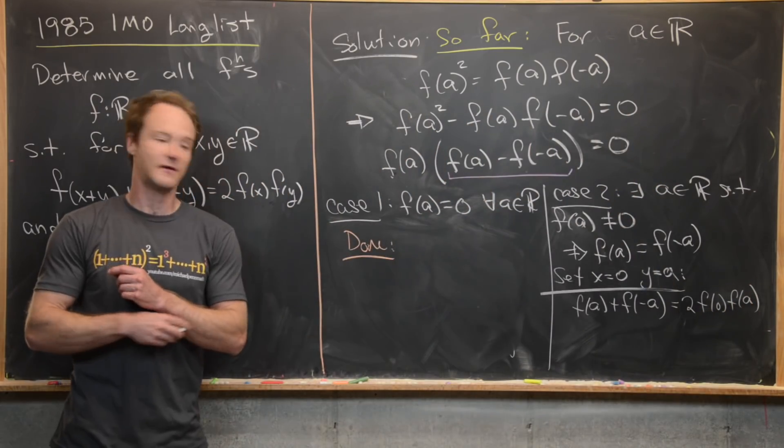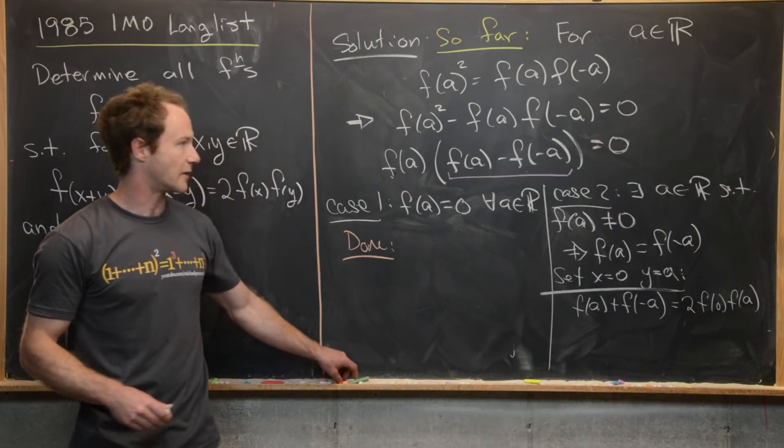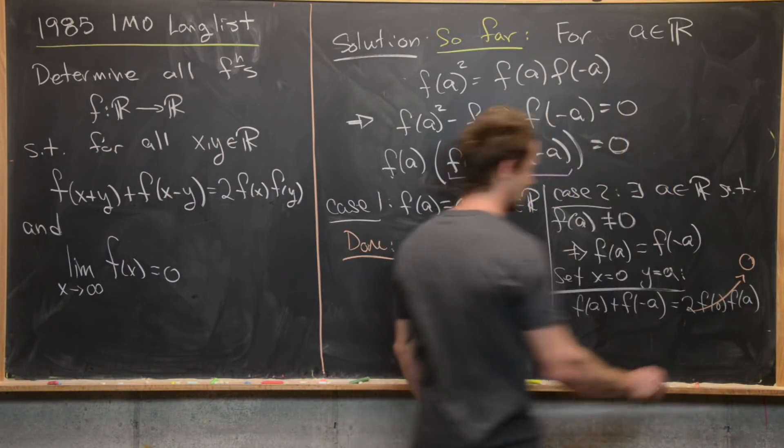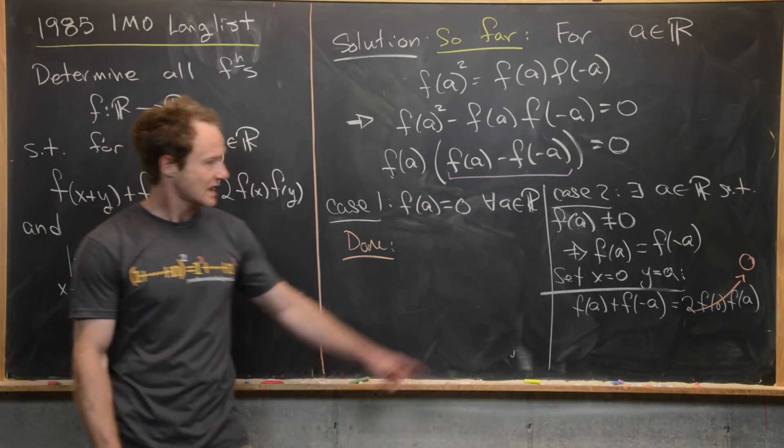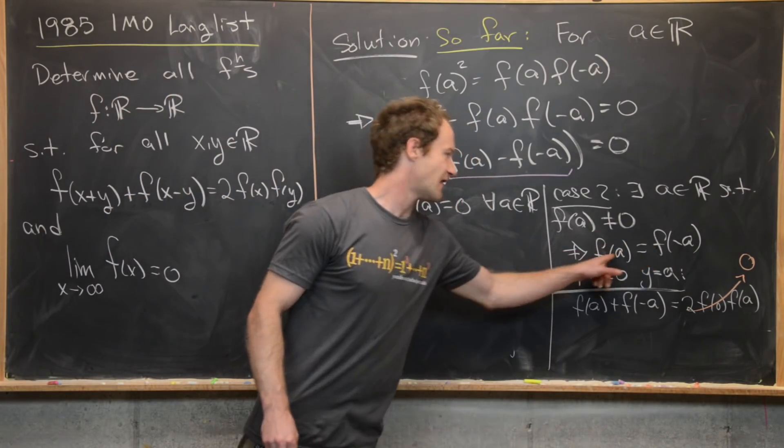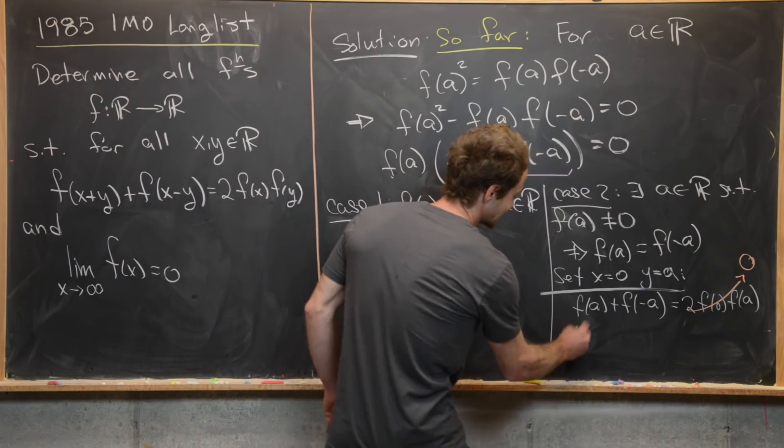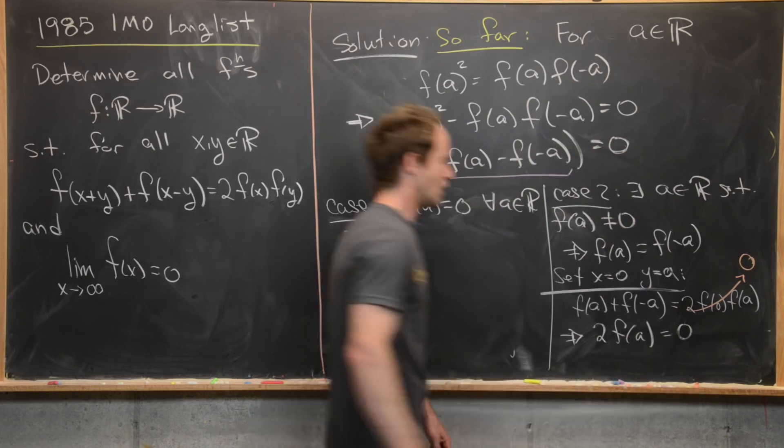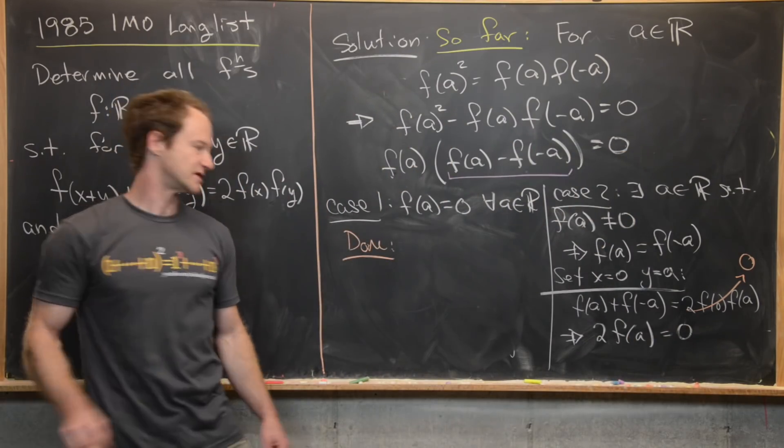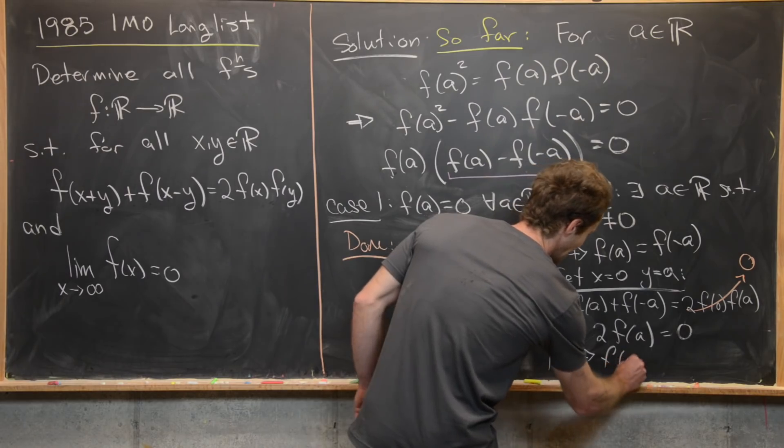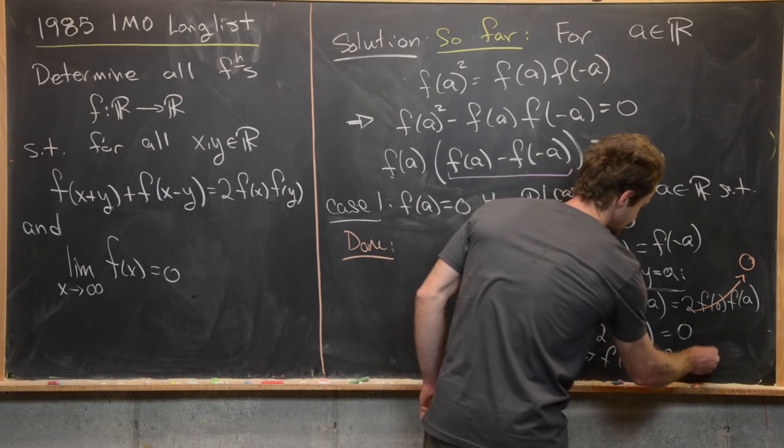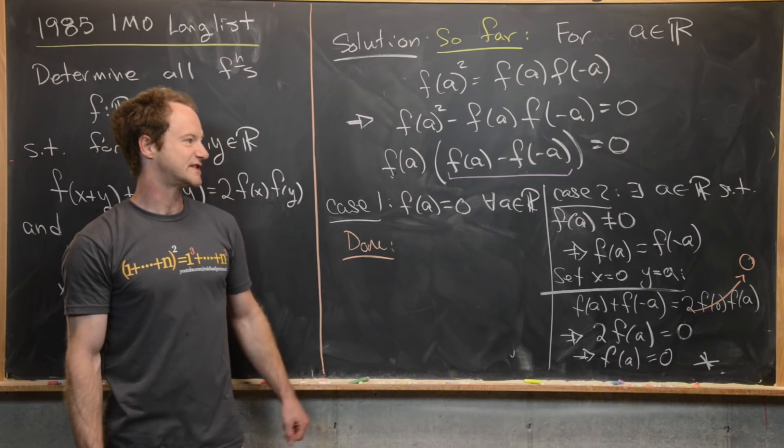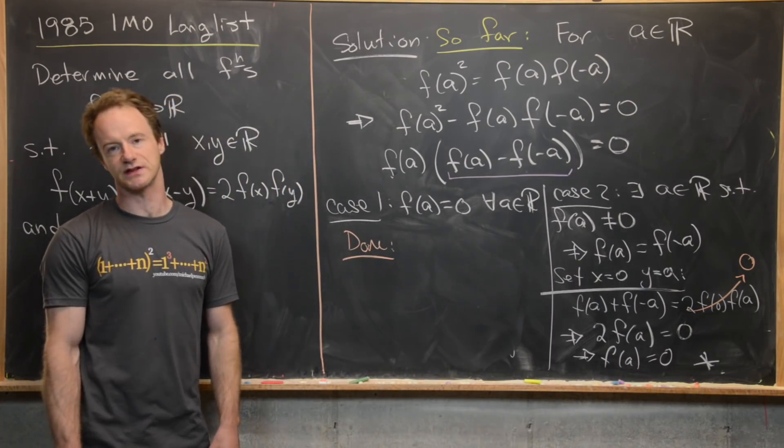But we know that f(0) is equal to zero from something that we calculated before. So that means this whole right hand side becomes zero. And then we know f(-a) is equal to f(a), but that tells us this left hand side is 2f(a). We have 2f(a) = 0, which tells us that f(a) itself must be equal to zero. But that's a contradiction because in this case, we started with the assumption that f(a) was not equal to zero.